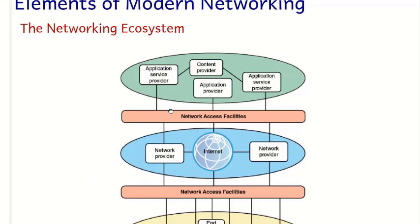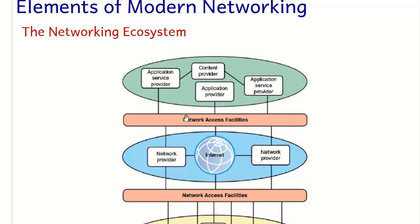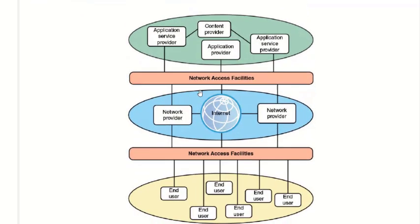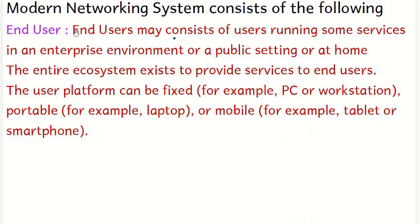We start with the diagram showing the elements of modern networking — the networking ecosystem. You can see various layers. At the top we have various applications: application service providers, content providers, and application providers. In the second layer we have the network provider and the internet, and at the bottom we have the end users.